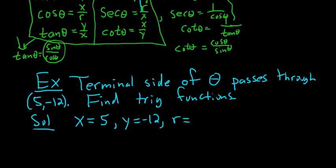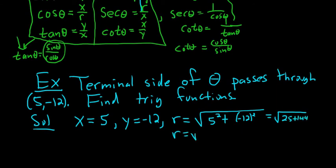R is the square root of x squared plus y squared. So it would be 5 squared plus negative 12 squared. Because it's x squared plus y squared. And so that's 25 plus 144. So r is the square root of 169. So r is equal to 13. So now we're going to use this information to answer the questions. To find the trig functions.